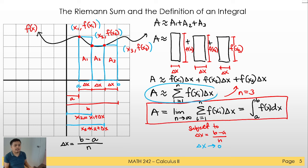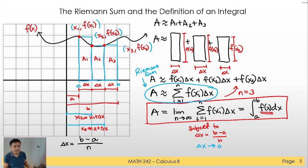What we did right here is called the Riemann sum — to be exact, the left Riemann sum, but in general, this is just the Riemann sum. So if you have a given function and a given interval a and b, you could find the area under that curve. And that is an integral.